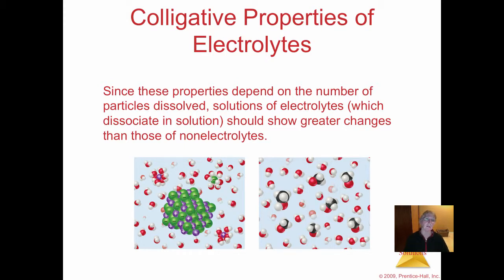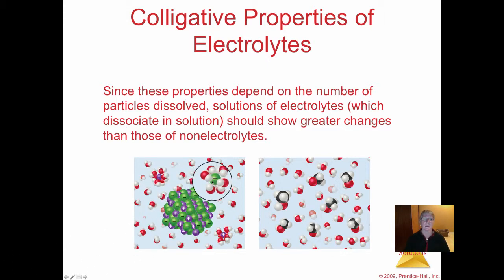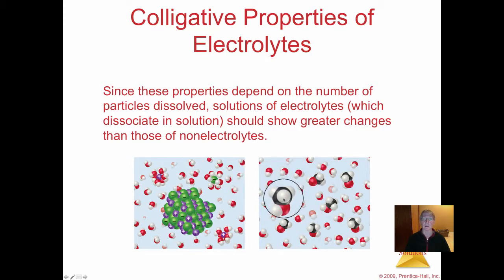So if you have an electrolytic solution, it will have greater numbers of particles that go into solution, as shown over here on the left-hand side — sodium and chloride ions that split up on a two-for-one basis. One mole of salt gives you two moles total of ions. On the right-hand side, this picture is showing a molecular substance: one mole of dry sugar yields one mole of wet sugar.